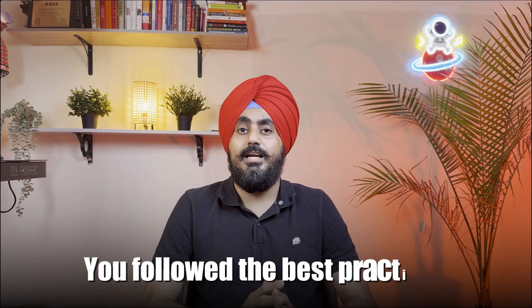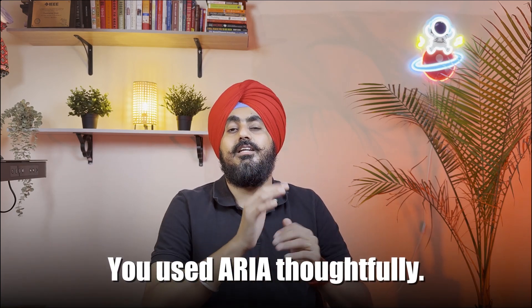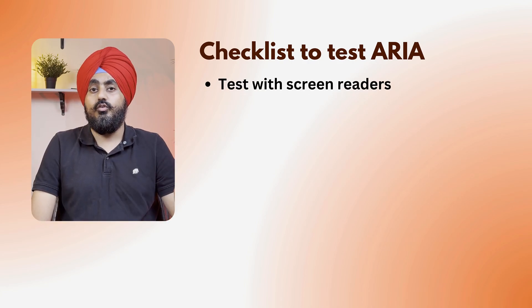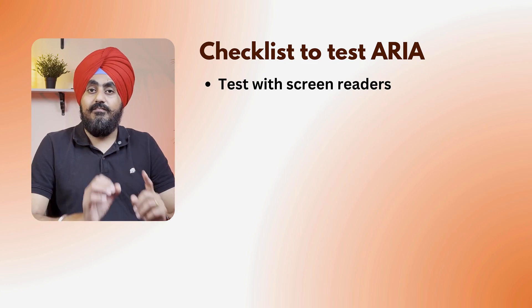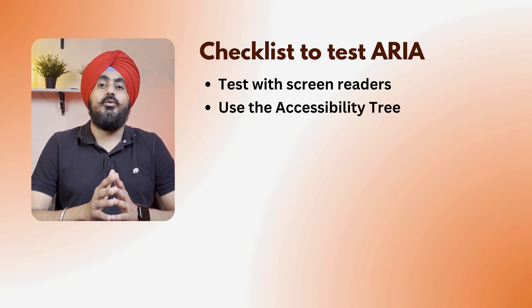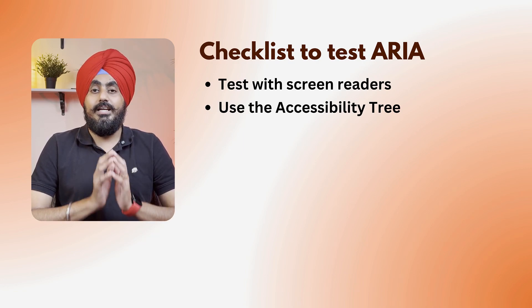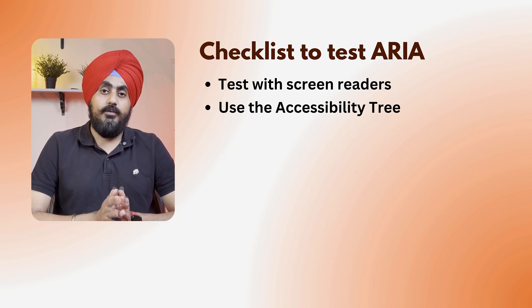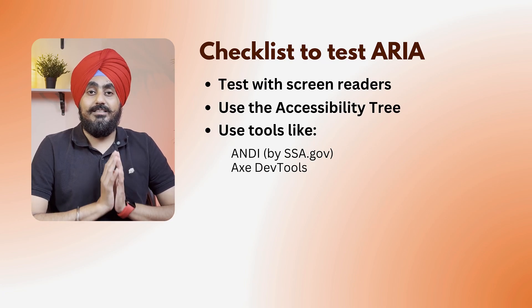You followed the best practices for ARIA and used it thoughtfully. But did you test it right? Even the most accessible-looking UI can break silently for assistive technology users. Use this checklist: test with a screen reader — VoiceOver for Mac, NVDA or JAWS for Windows. Navigate using arrow keys — does it make sense? Use the Accessibility Tree in Chrome DevTools, go to the Accessibility Pane, and check if the right name, role, and value are present. Use tools like Axe and Chrome DevTools. And try reading out loud — would a blind user understand the structure? If not, go back and fix it.